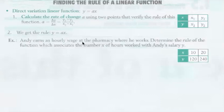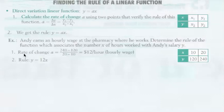For example, Andy earns an hourly wage at a pharmacy where he works. Determine the rule of the function which associates the number x of hours worked with Andy's salary y. So what we're going to do is figure out the delta y over the delta x. The delta y is going to be 240 minus 120. The delta x is going to be 20 minus 10. And that's going to give you $12 per hour. And the rule is going to be y is equal to 12x.